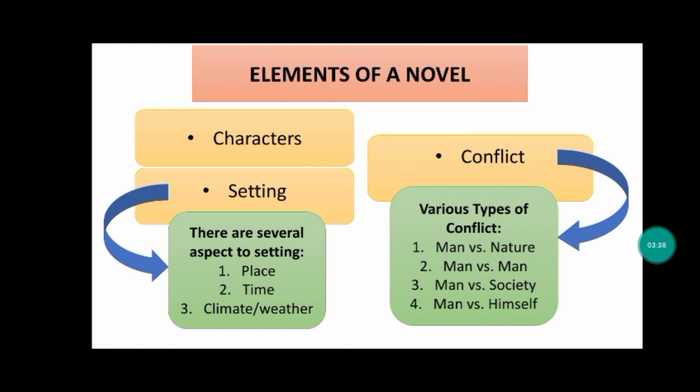There are various types of conflict which can usually be categorized as one of the following. Number one is man versus nature, a character struggling against nature. Number two, man versus man, a struggle between two or more characters. Number three, man versus society, a struggle between the main character and some aspect of society. And number four, man versus himself, a struggle of opposing forces within one character.